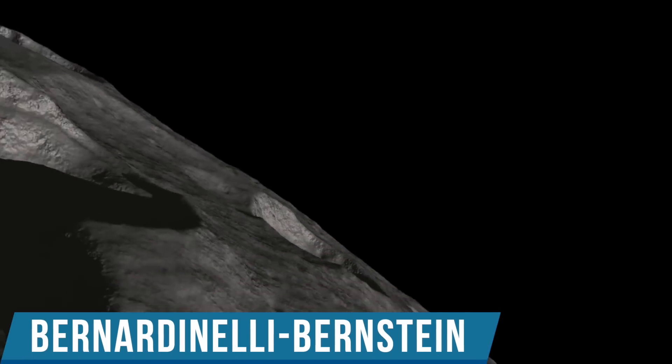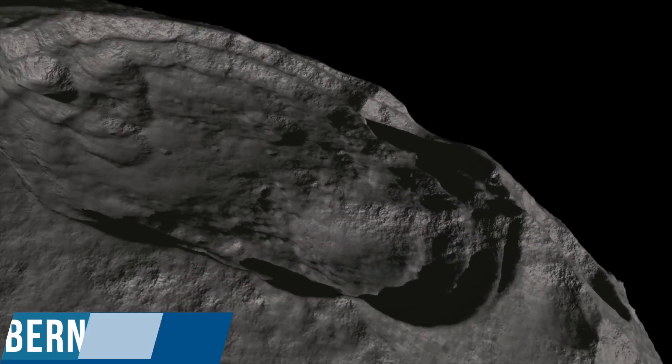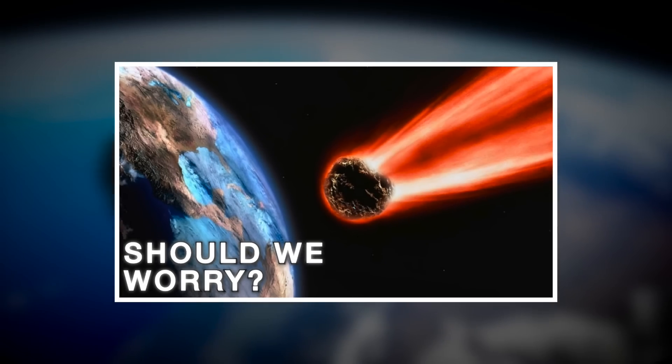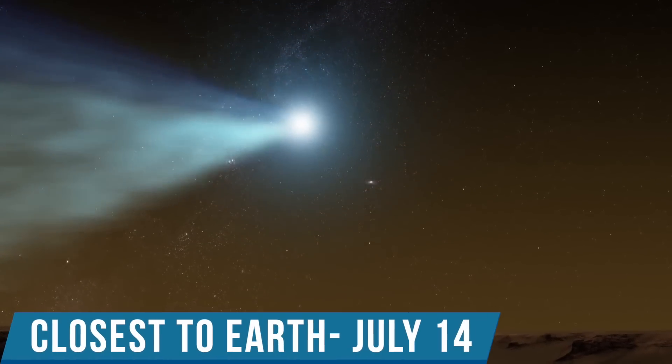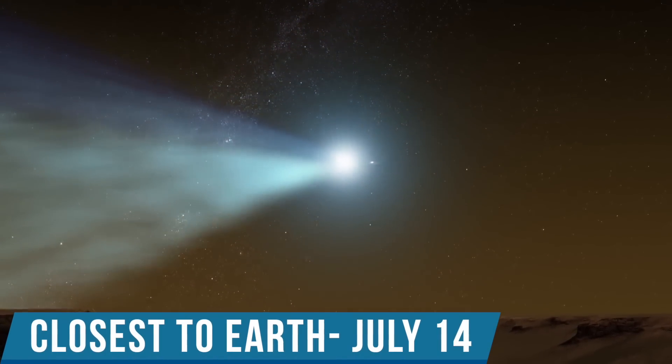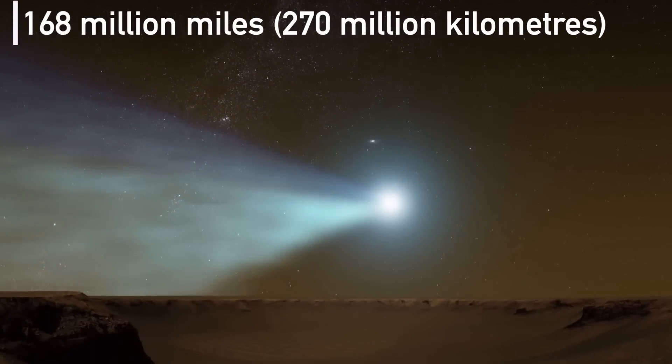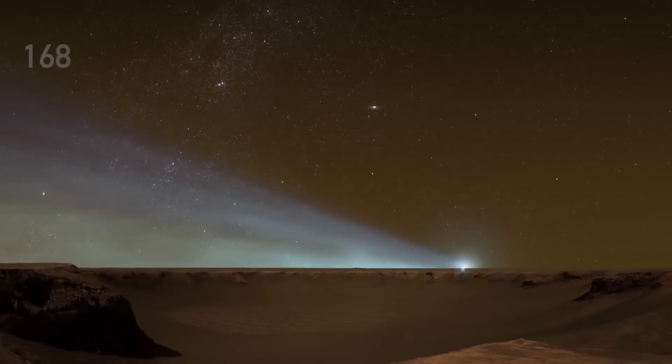Although it was surpassed last year by a distant mega comet known as Comet Bernardinelli-Bernstein, about which a full thorough video is already published on the channel, K2 will pass closest to Earth on July 14th when it will be around 168 million miles or 270 million kilometers away.